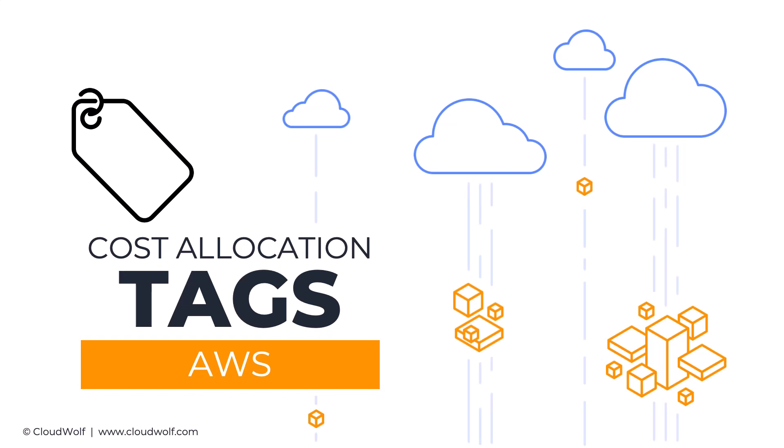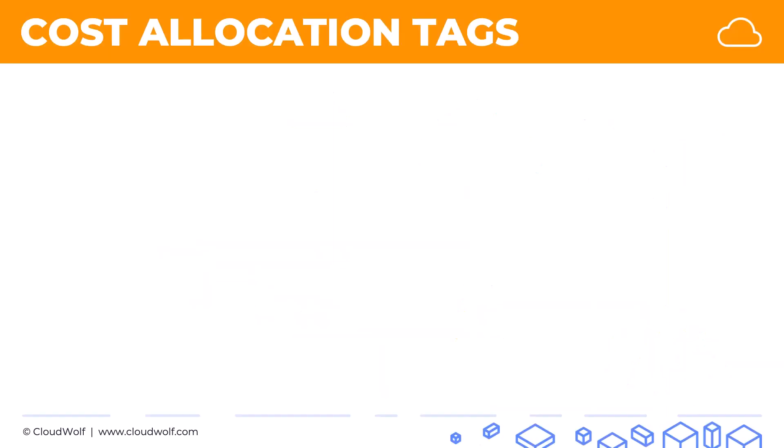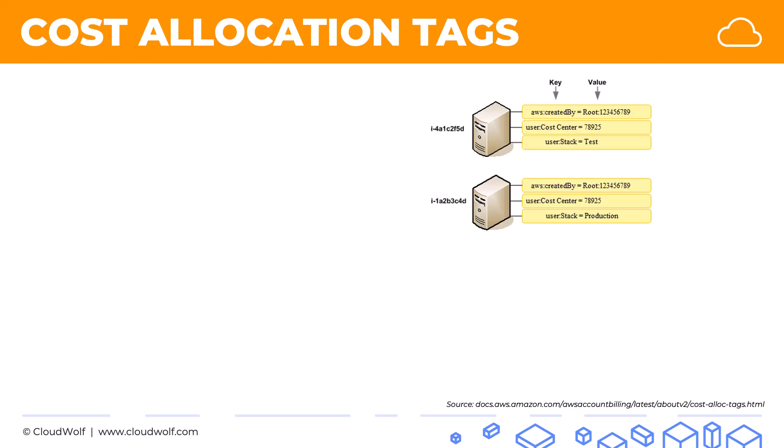Hello and welcome back. In this super quick tutorial we're going to look at cost allocation tags. We've got two EC2 instances, represented by these server-like images, and as you can see each one of them has an AWS generated cost allocation tag.